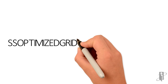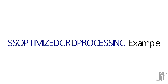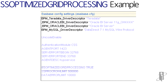Here is an example of how the spreadsheet-optimized grid processing setting is used in a configuration file. Since we did not specify the app name or database name, this setting would apply to all applications and databases on the S-Space server.